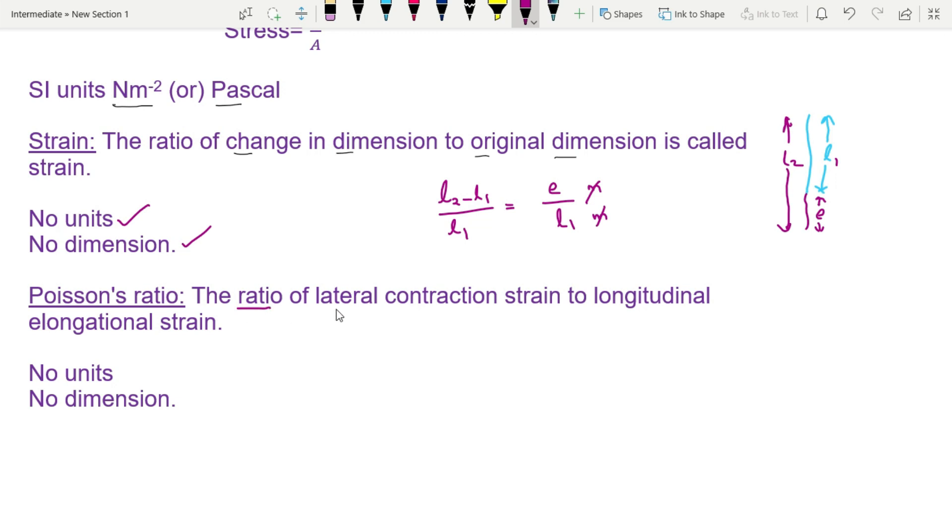Next is Poisson's ratio. Poisson's ratio is the ratio of lateral contraction strain to longitudinal elongational strain. For example, take an elastic body with initial length L1. When force is applied, it stretches.